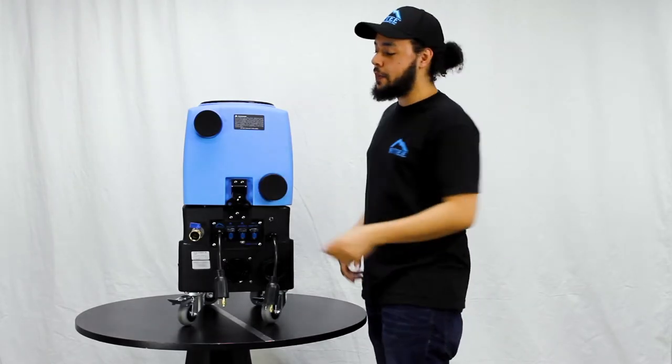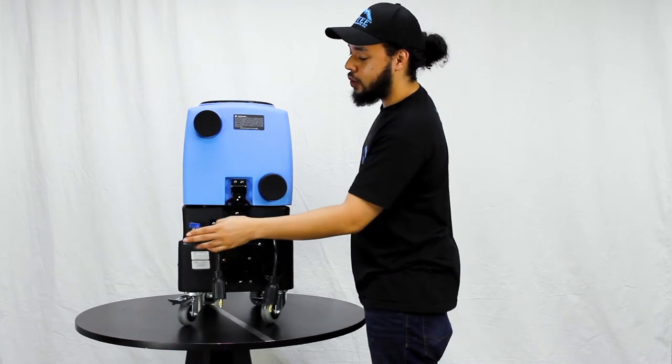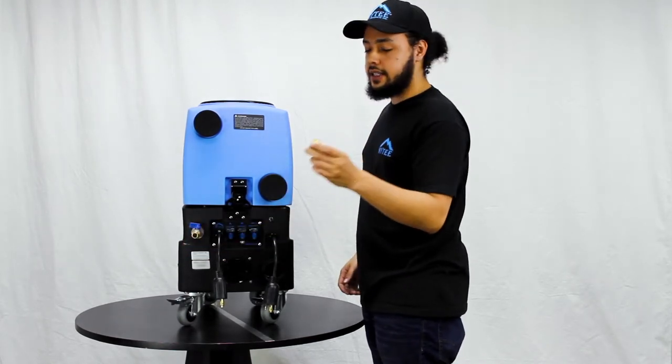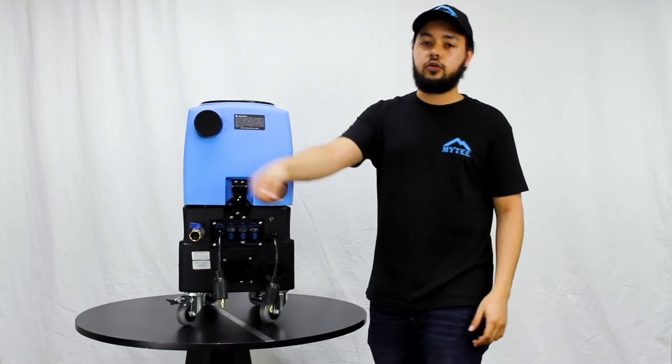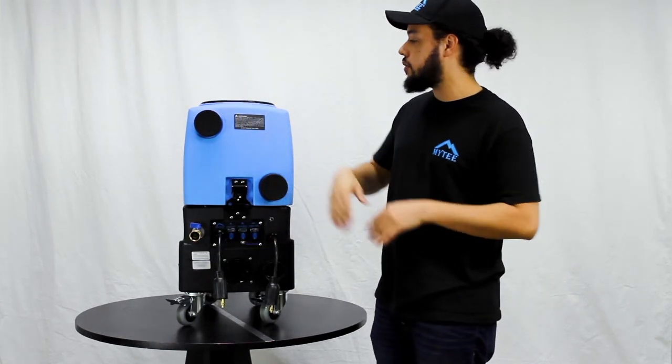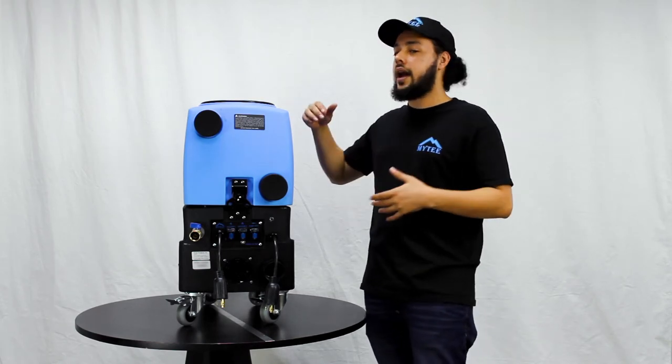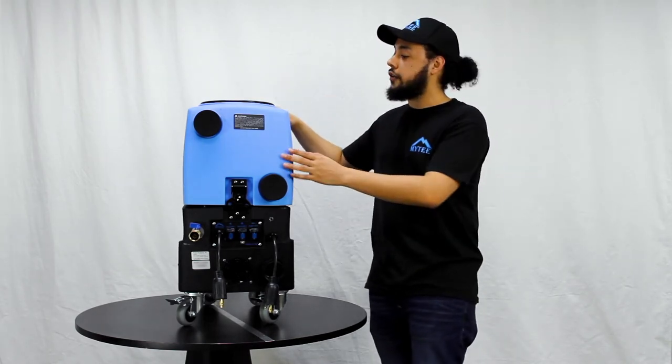Speaking of the auto pump out feature, we have the auto pump out port right here. It includes a nice quick connect adapter for a standard garden hose. You can use that to run out to a receptacle, empty the machine out so you don't have to worry about coming back and periodically emptying out your machine.